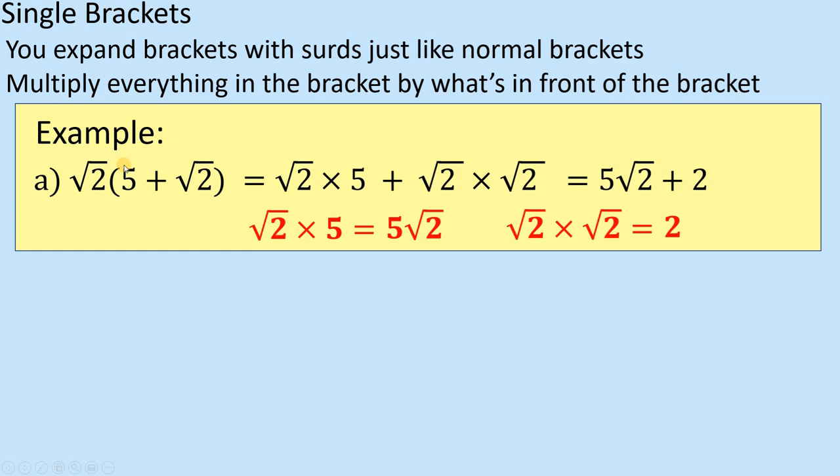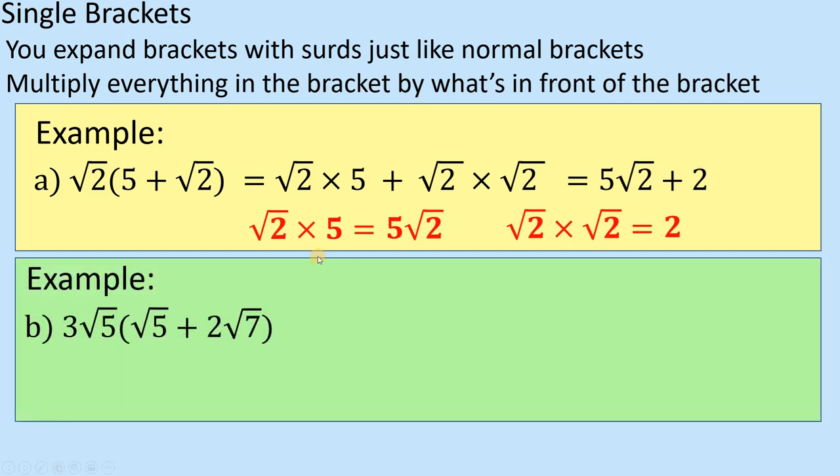So if I'm timesing a whole number by a surd, then they just go next to each other. If I'm timesing two surds, then I can times the two surds, it becomes root 4. But of course, if they're both the same, then it ends up being just 2. So let's have a look at another one, where I've got a little bit more going on.